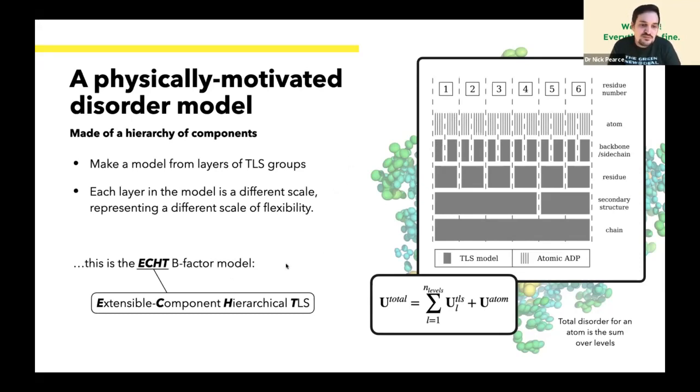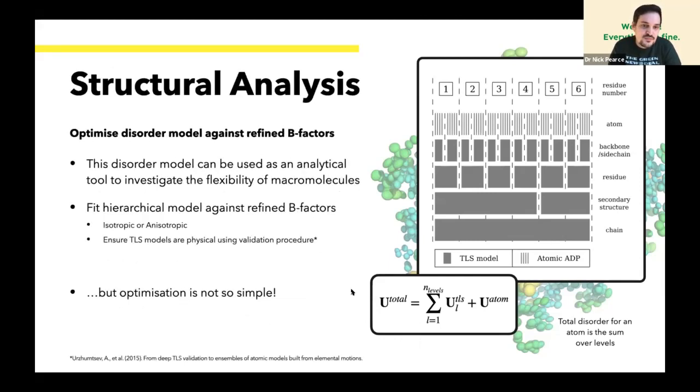So we call this the Echt-BFACT model, which is a joke because Echt means real in German or Dutch, and it's the Extensible Component Hierarchical TLS. We can use this for structural analysis to identify any hierarchical disorder components in a macromolecular model. We can take this model and fit it against a refined crystallographic or cryo-EM structure. It's flexible, you can apply it to both isotropic or anisotropic atoms, and we use a TLS optimization procedure that ensures it's valid using the validation procedure proposed by Urzhumtsev in 2015.